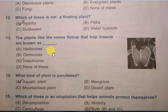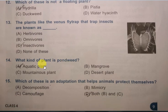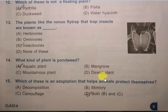Question 13: Plants like the Venus flytrap that trap insects are known as what? Options are: herbivores, omnivores, insectivores, none of these. The correct answer is insectivores, because it traps insects.